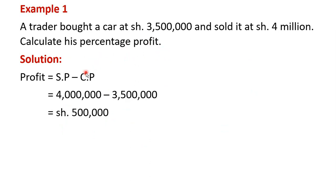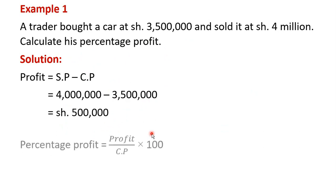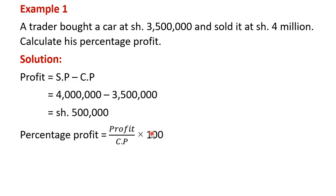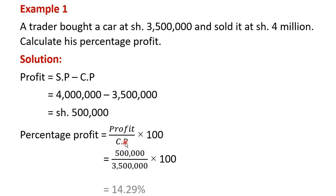After getting the profit, we can now calculate the percentage profit. Percentage profit is given by the profit divided by the cost price times a hundred. That is 500,000 shillings divided by 3,500,000 shillings, multiplied by a hundred, which gives us 14.29%. That is our first example.